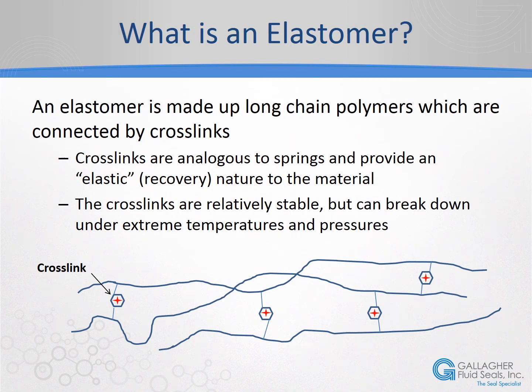Before delving into our discussion on fluoroelastomers, it is important to understand what an elastomer is. In basic terms, an elastomer is made up of long chain polymers that are connected by crosslinks. These crosslinks can be thought of as springs that act to give the material its recovery characteristics, also known as elastomer memory. Crosslinks are generally considered stable, but they can break down over time due to high temperatures and/or pressures. When crosslinks break down, the elastomer loses its resiliency — that is, the ability to recover after it has been deformed. This loss of seal resiliency can result in seal failure.